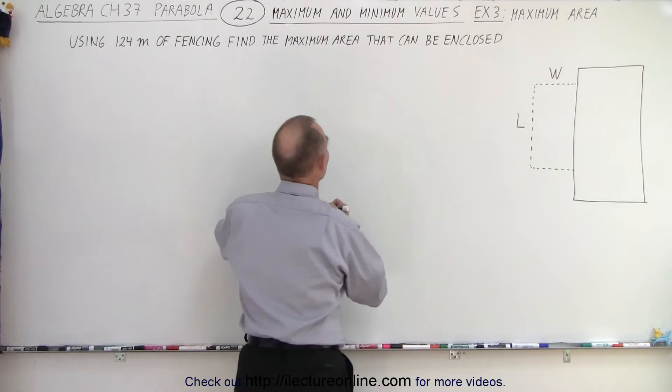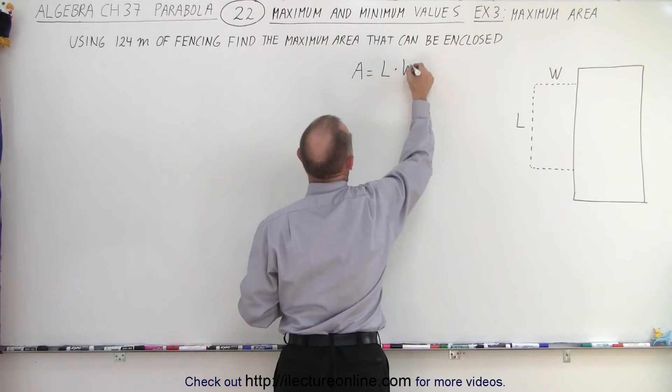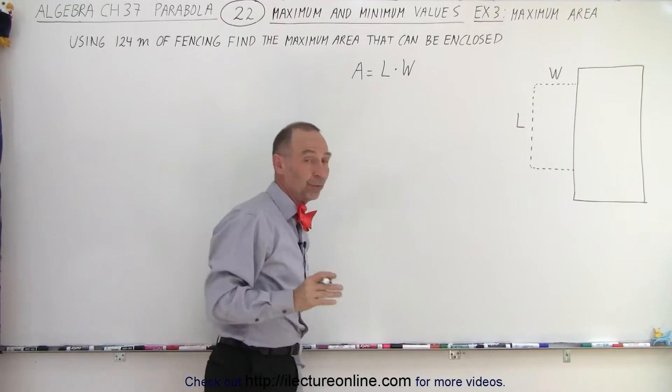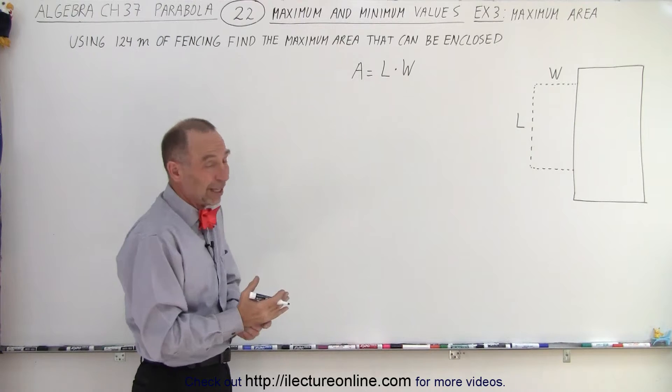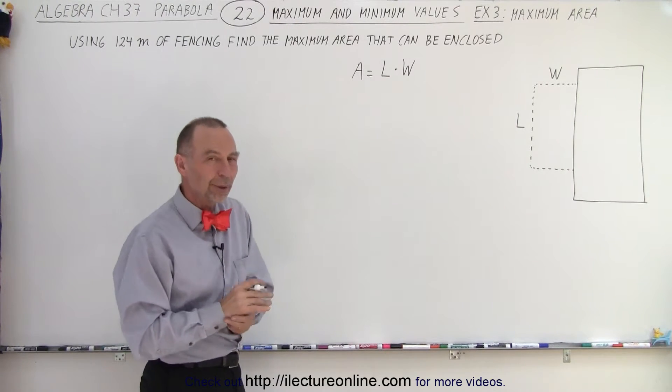So what we have here is that the area is going to equal the length times the width, and we want that to be a maximum. But notice we have two variables, length and width, and we don't know what they're going to be.